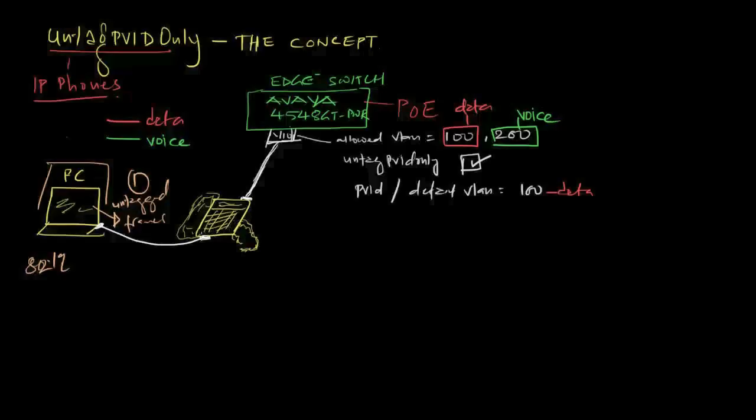Basically there are two ports on the Avaya phone or Nortel phone. One connects to PC, the other one connects to the switch. This is almost like a virtual switch, we can say. This phone has intelligence to tag frames. We can configure this device with a particular VLAN, let's say VLAN 200. In this case, this belongs to voice. What happens is all the frames coming from PC to here and from here to switch are untagged frames. All the frames leaving from this device, the phone to switch, are tagged frames with VLAN 200.